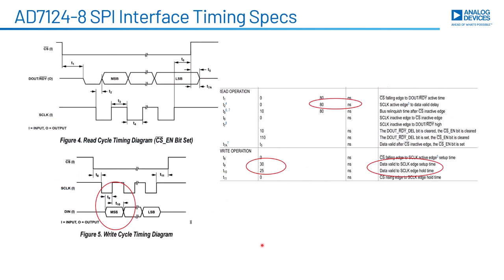Each device — the controller and the target — has its own timing requirements that look an awful lot like what we just described: setup time and hold time. Data valid to SCLK edge setup and hold time, with respect to the target device, the AD7124 A-to-D converter. We've got an active clock edge, a setup time before the edge, and a hold time after the edge — in this case, 30 nanoseconds and 25 nanoseconds respectively.